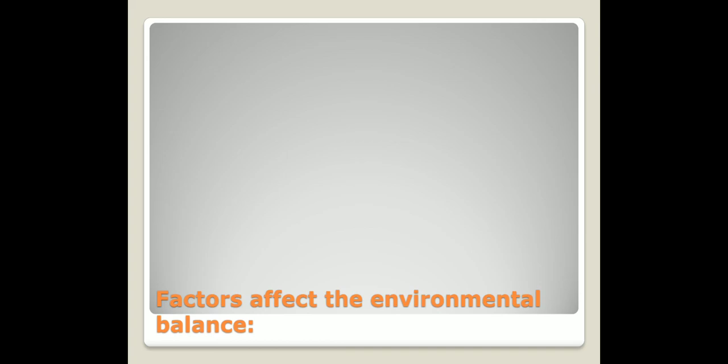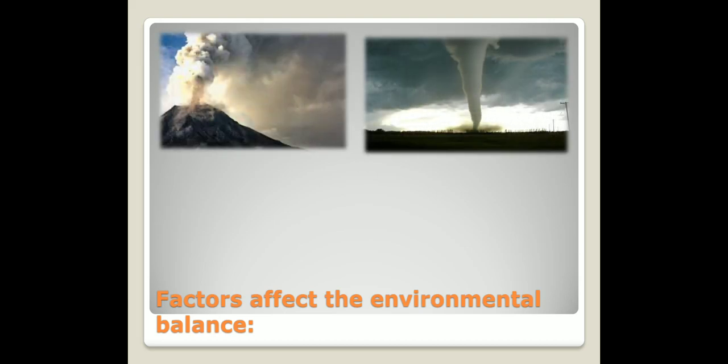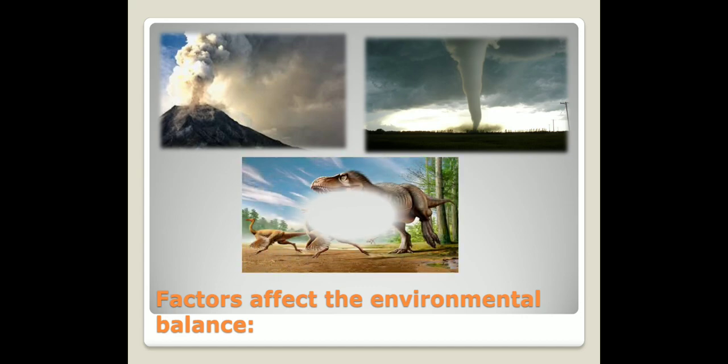Let's talk about the factors that affect the environmental balance. There are two factors. Number one is the natural changes that happen in the world, like volcanoes, tornadoes, and anything that happens in the climate or in the soil. These can affect the environmental balance, like what happened with the dinosaurs, leading to their disappearance from the world.